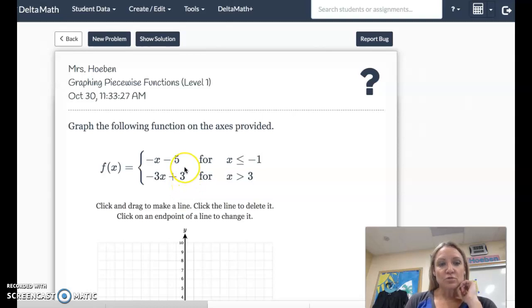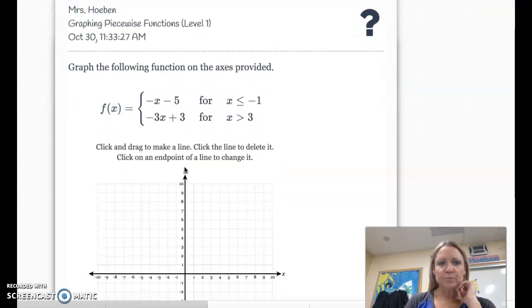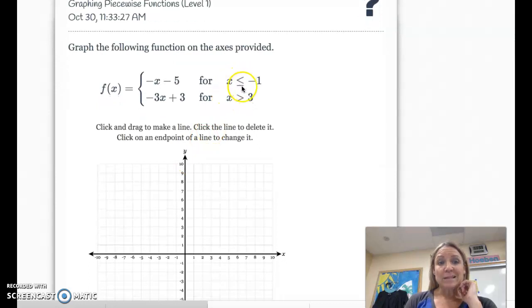So let's do the top one first. If it's less than or equal to negative 1, I'm going to plug in this negative 1 right here for x, which makes it positive 1. And then 1 minus 5 is negative 4. So negative 1, negative 4. It's going to start right here, but we want numbers that are less. So we're going to be coming from the left to this point, or from negative infinity to negative 1.